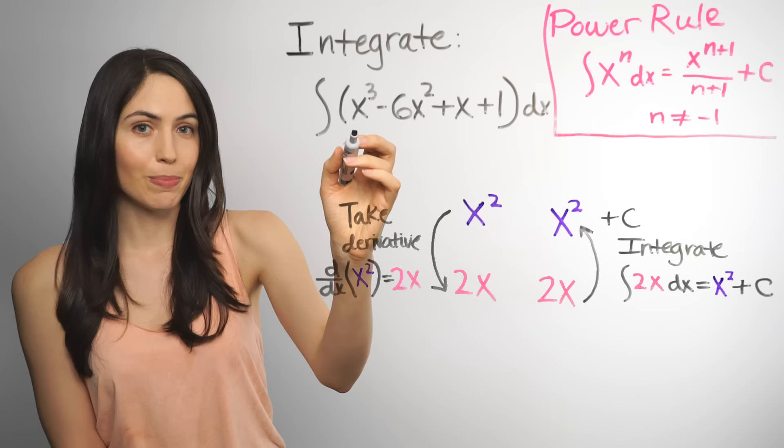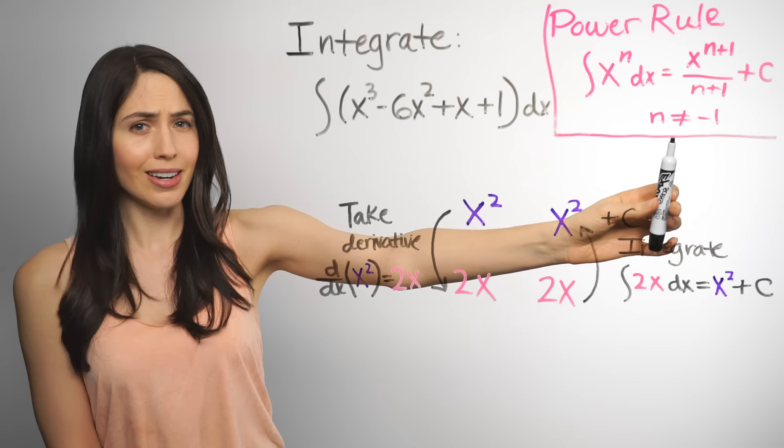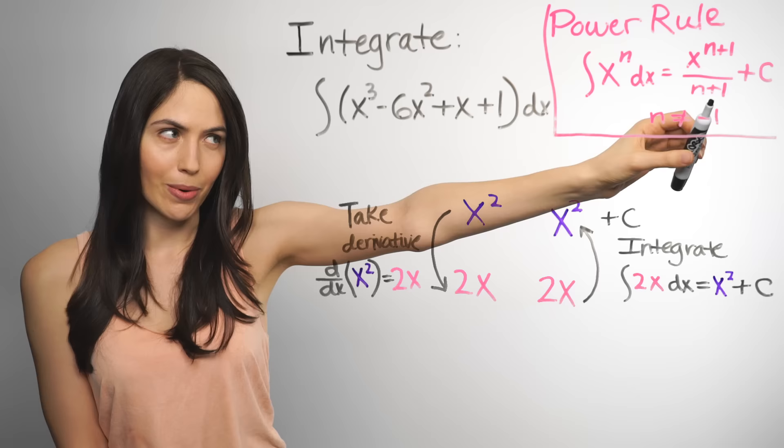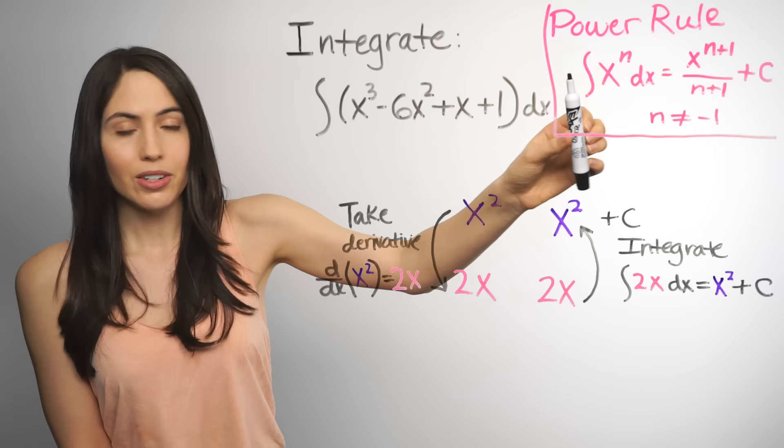So this first term is an x power. So we can use the power rule. And all that says is that if your power is not negative 1, the integral of x to the power is x to the power raised by 1 over that power raised by 1 plus c.